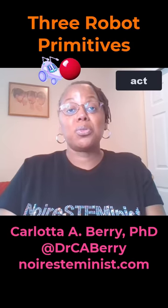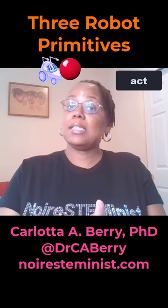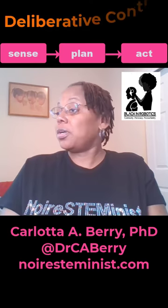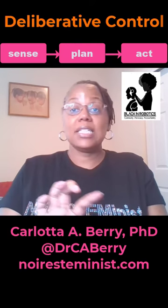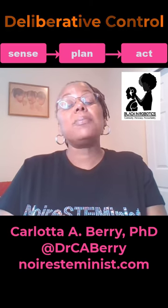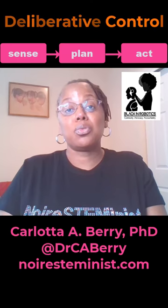So the three robot primitives are sense, plan, and act. If you put them in order — sense, plan, act — it's called deliberative control.